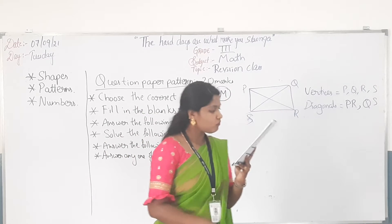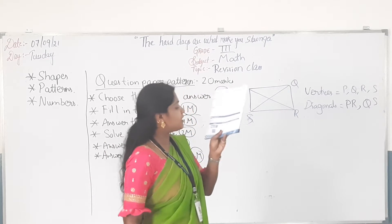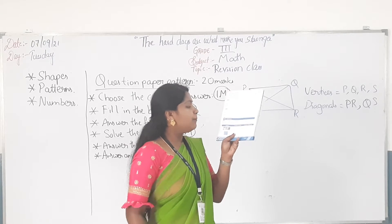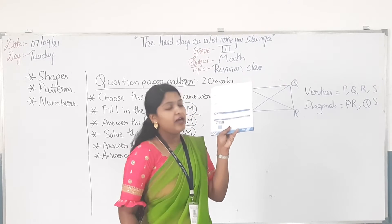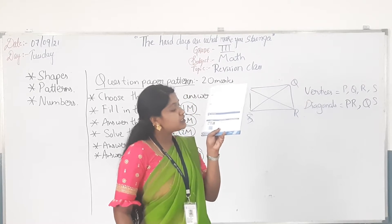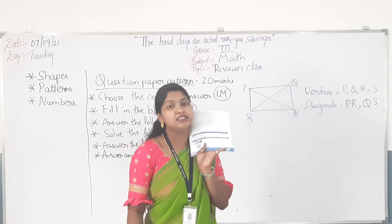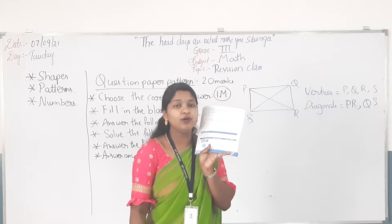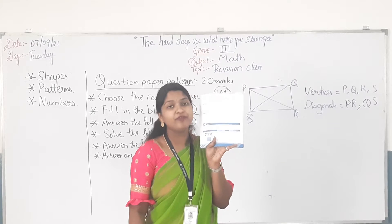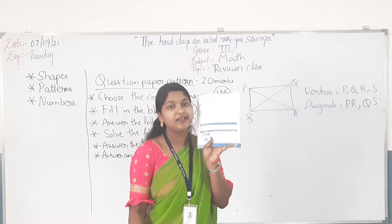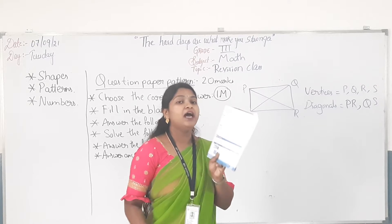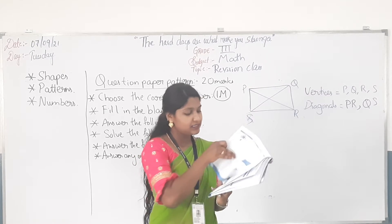See page number 3, 17th question: complete the following table. They have given a 20 rupees note. You have to find the number of vertices. A 20 rupee note has the shape of a rectangle, so it has four vertices and two diagonals.